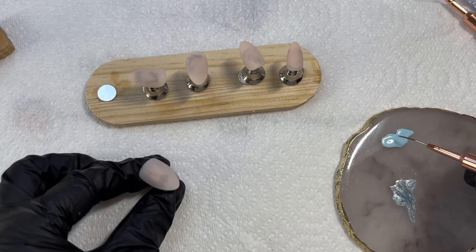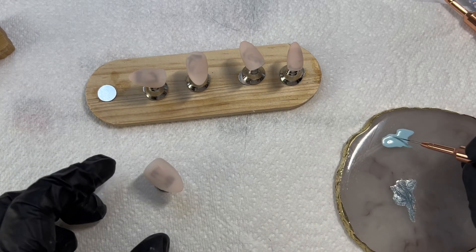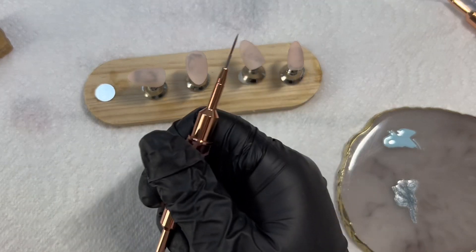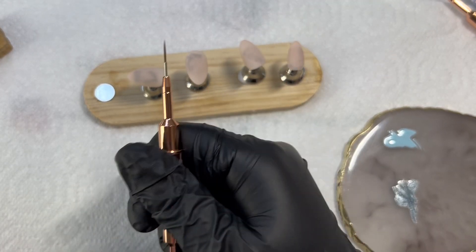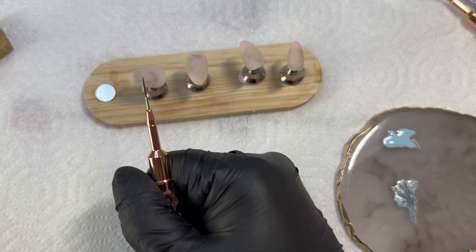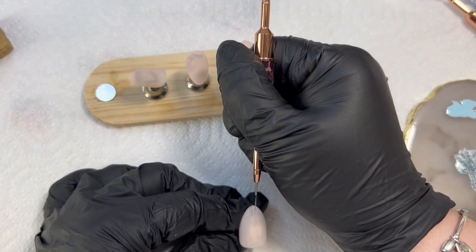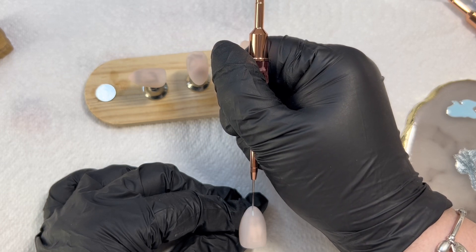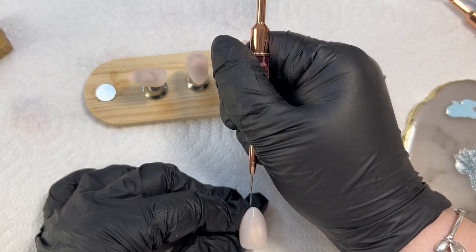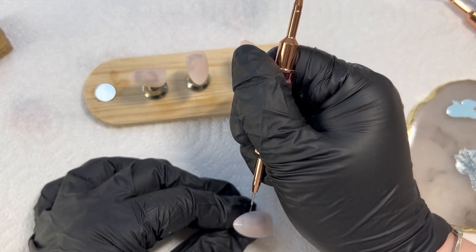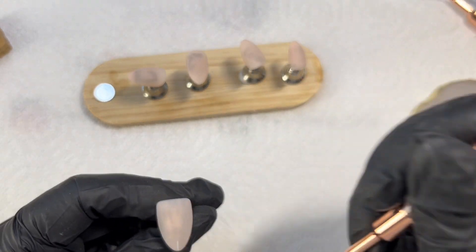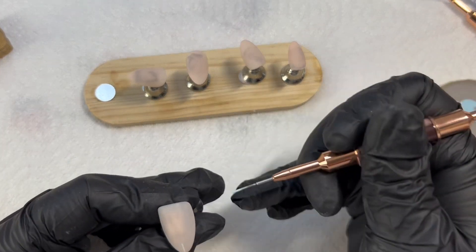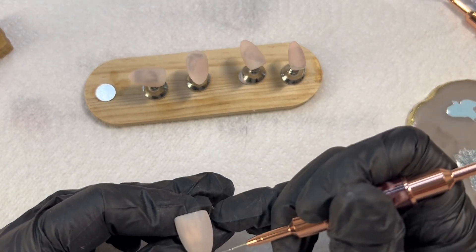Next I've put two Born Pretty colors onto a palette. That is the Born Pretty CPO4, which is that lovely pale pastel blue, and then I've also put one of the sea blue magnetic gel polishes as well. I can't remember the number at the moment, but I will show you later on in the video.